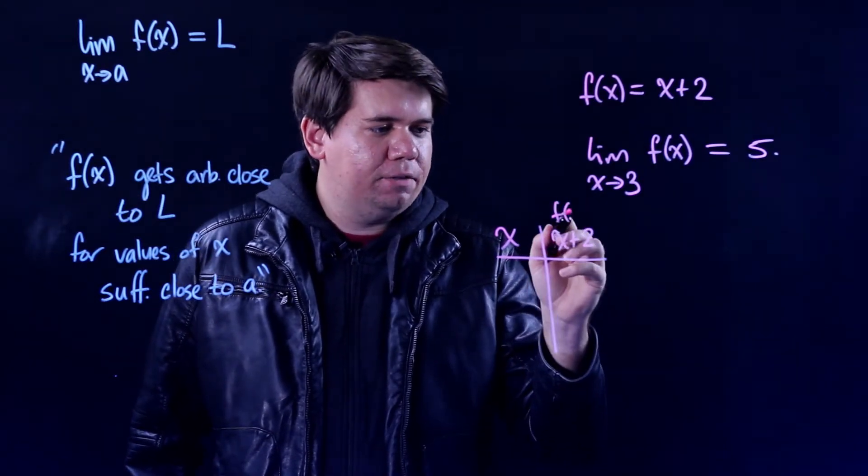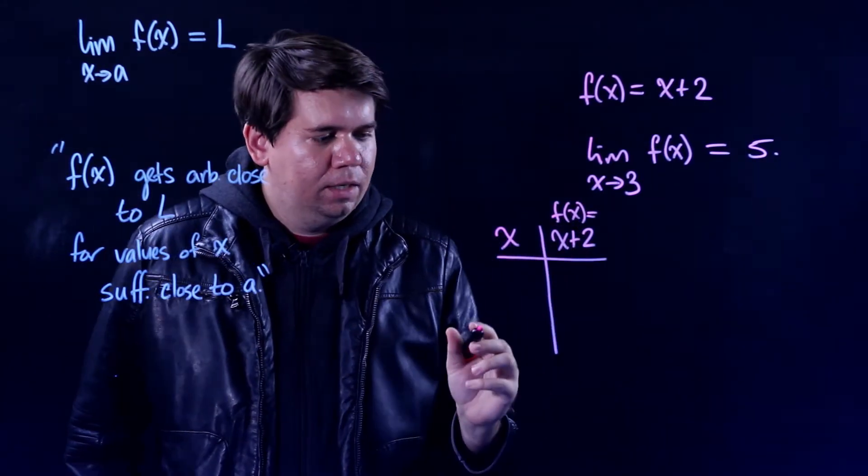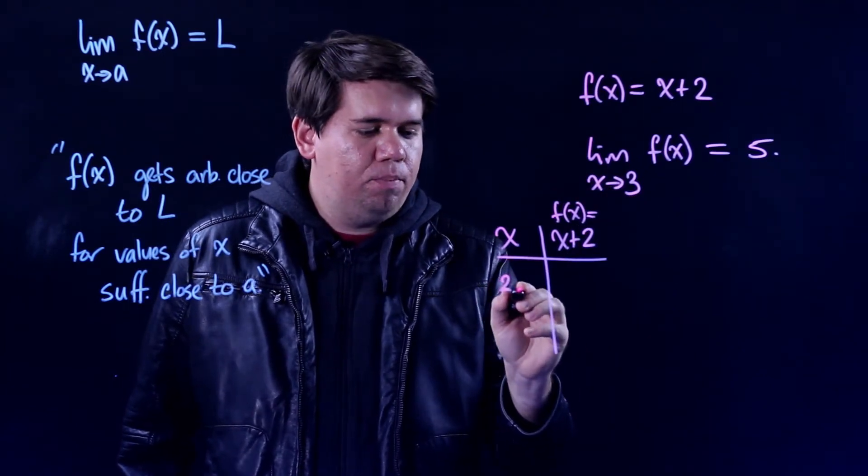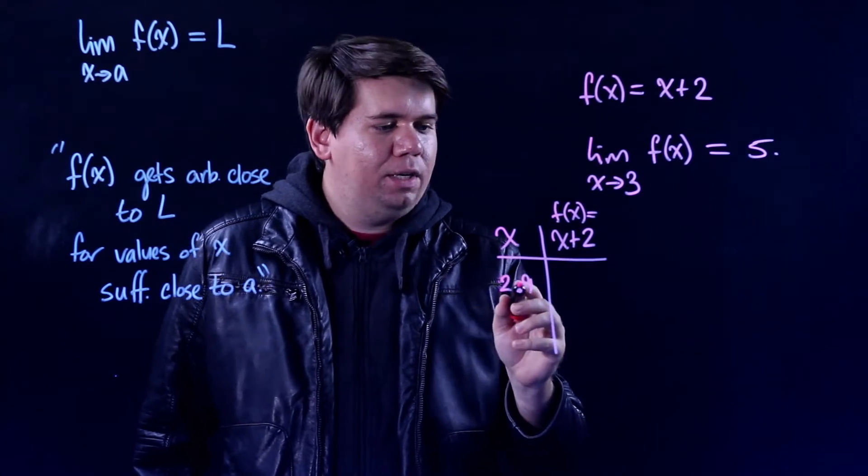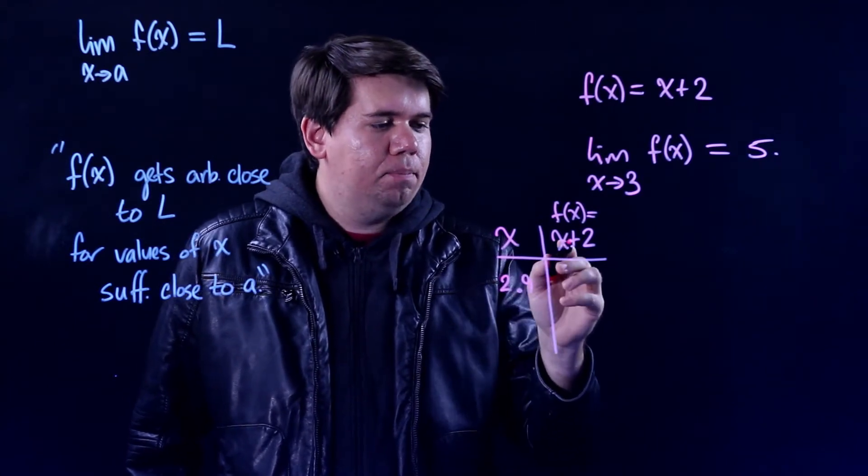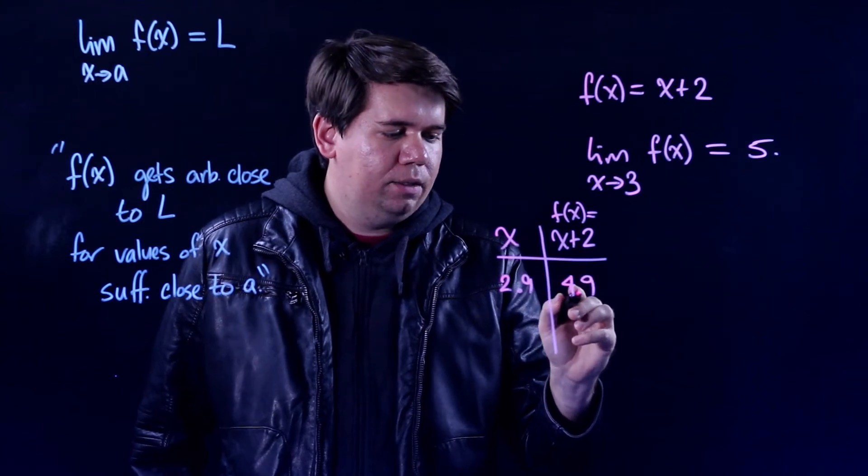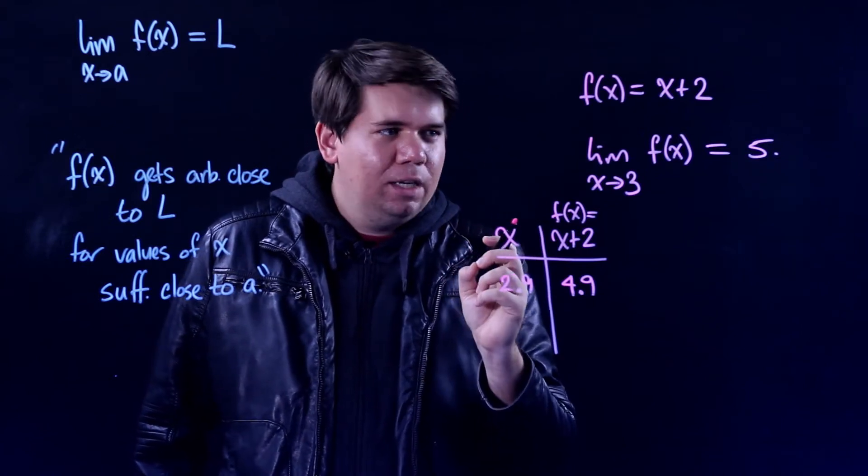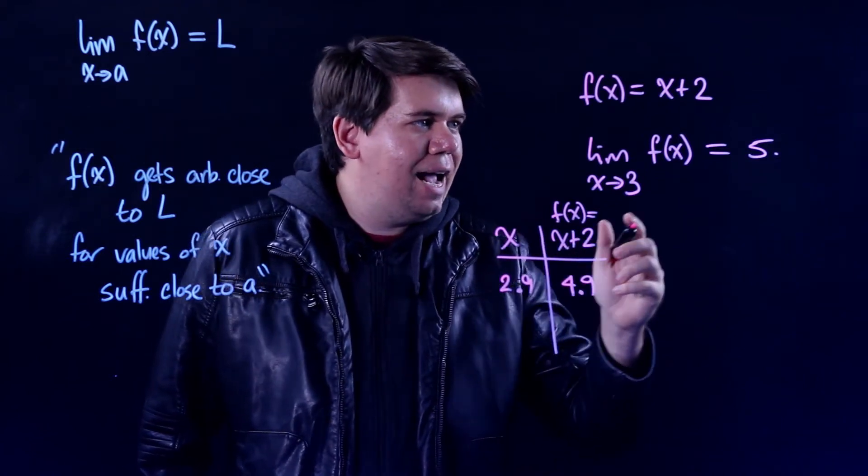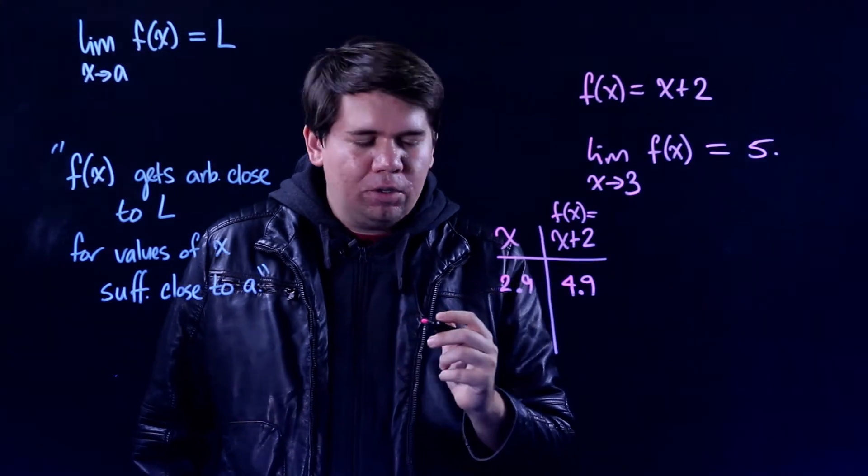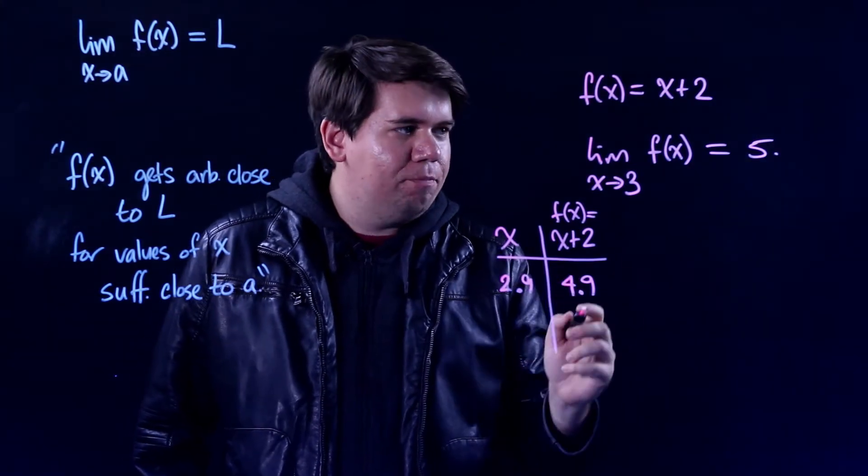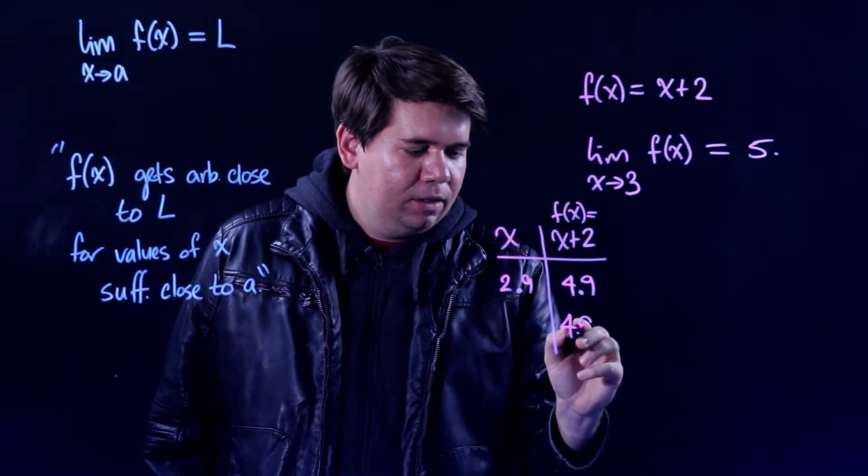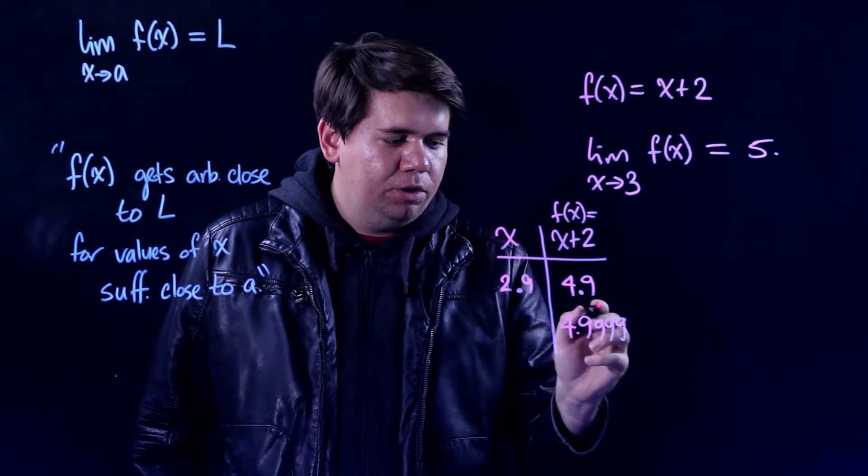You might make a table of x values and the corresponding outputs, the corresponding x plus 2s. If you plug in something really close to 3, like 2.9, notice what happens: you would get out 2.9 plus 2 is 4.9. Sure enough that's pretty close to 5, but the statement's actually a little bit more precise—it's saying that you can get as close to 5 as you want. So maybe you want to be even closer to 5, maybe you want to be like at 4.9999.